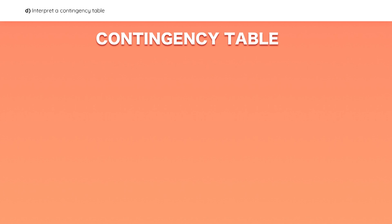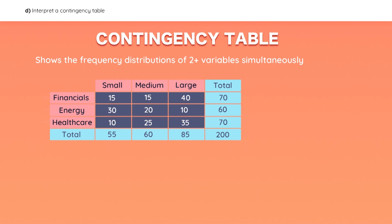Now let's move on to the contingency table, which is a table that shows the frequency distributions of two or more variables simultaneously. For example, here we have the sector in rows and the company size in columns. We can easily see that there are 30 companies that are both energy companies and small-cap companies. The values inside the table are called joint frequencies, and the totals for each row and column are called marginal frequencies.